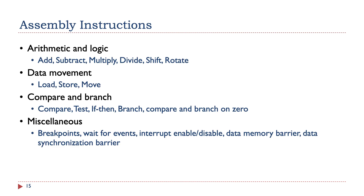We have four groups of ARM instructions. We have the arithmetic and logic instructions, which process data. The data movement instructions, which can access memory. The compare and branch instructions, which control the flow of operation of the program. And other miscellaneous instructions like directives. In our discussion, we will only focus on the first three groups of instructions. It's up to you if you will further study the miscellaneous instructions.